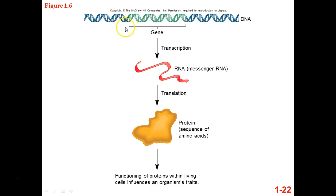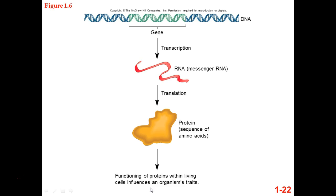So a segment of DNA is a gene. The messenger RNA transcript goes to the ribosome, is translated into a protein made up of amino acids. It will function in some way and is the reason why we look the way we do for the most part — this very basic gene expression.